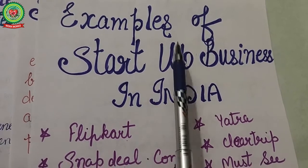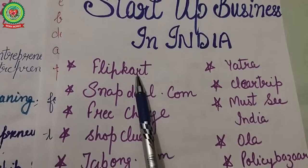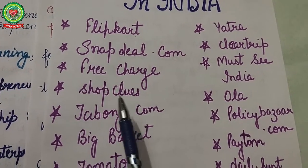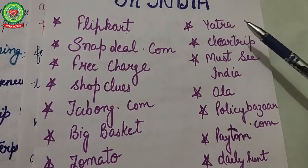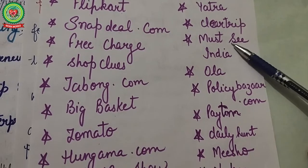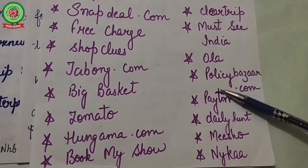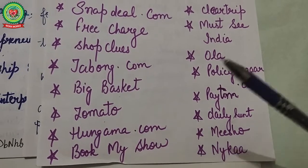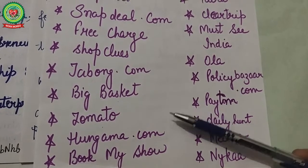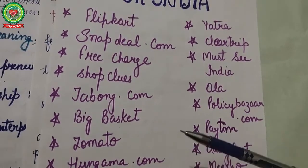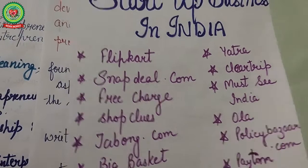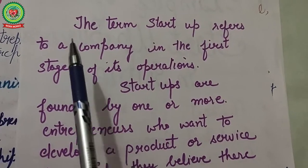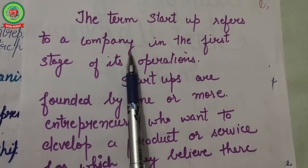Examples of startups in India include Flipkart, Snapdeal, Freecharge, Shopclues, Jabong, BigBasket, Yatra, ClearTrip, MustSee India, Aula, Paytm, Delhi Hunt, Hungama, and BookMyShow. These are some startups that are successfully running in India. The term startup refers to a company in the first stage of its operations.